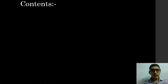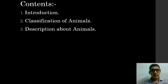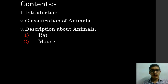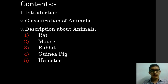The contents of this presentation are: introduction, classification of animals, and the description of animals. This presentation consists of animals like rat, mouse, rabbit, guinea pig, hamster, frog, cat, and dog.